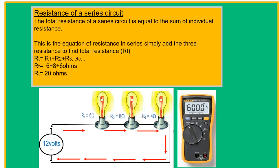Resistance of a series circuit: the total resistance of a series circuit is equal to the sum of individual resistances. Simply add the resistances to find the total resistance, just like with voltage. If we have R1 = 6 ohms, R2 = 8 ohms, and R3 = 4 ohms, just add the three values and you get 20 ohms total.